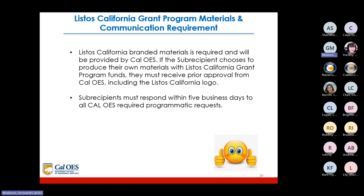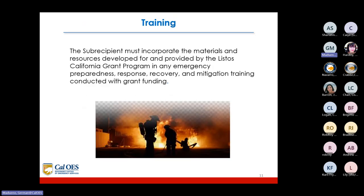Listos California branded material is required and will be provided by CalOES. If the sub-recipient chooses to produce their own materials with Listos California grant program funds, they must receive prior approval from CalOES, including the Listos California logo. Sub-recipients must respond within five business days to all CalOES required programmatic requests.